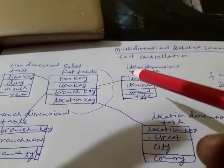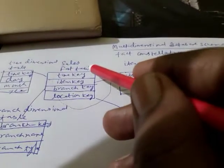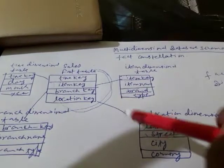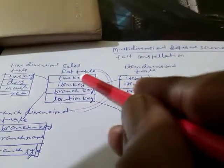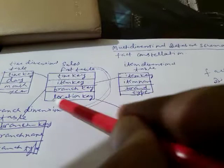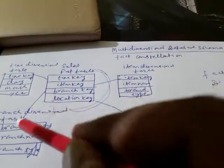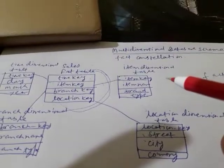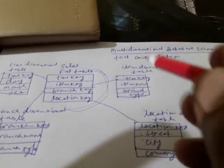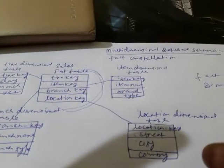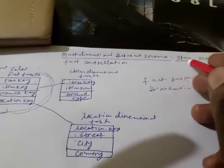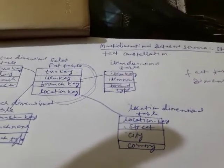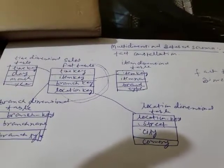When you design in this way — one fact table with all dimensional details stored in separate connected tables — that type of schema is known as the star schema. It is called star because one central fact table is there and all dimension tables are related to it, just like a star.